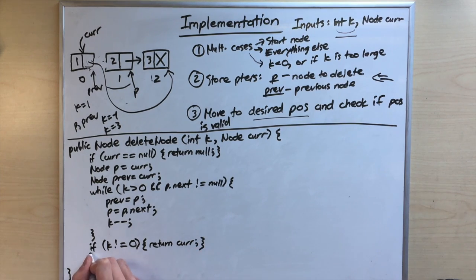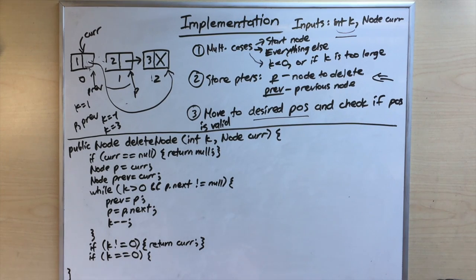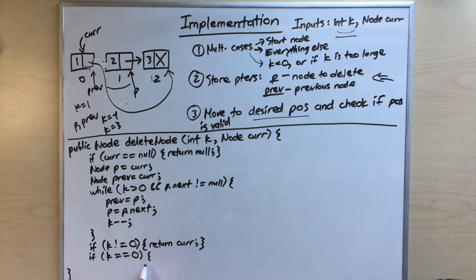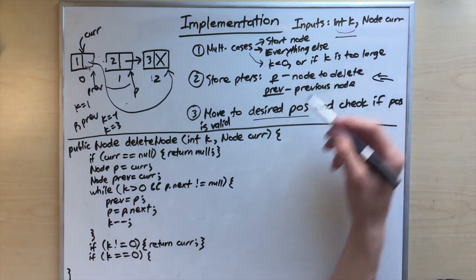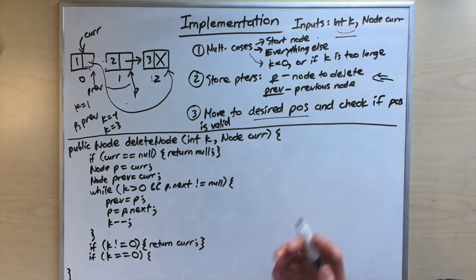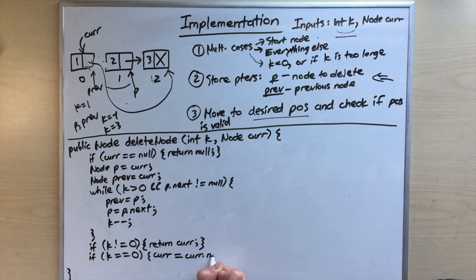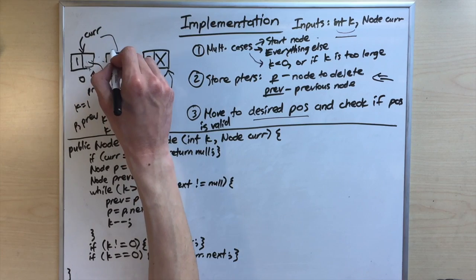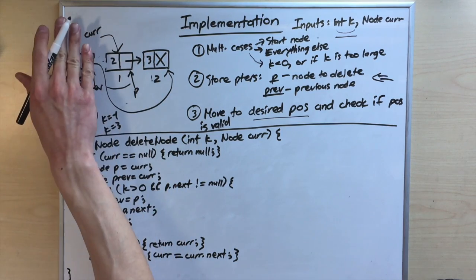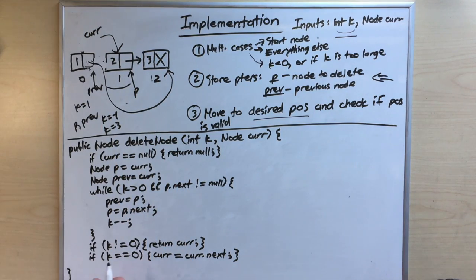If k does equal zero, we need to delete a node. If we're deleting the first node (prev equals p, meaning k was zero from the start), we set cur equal to cur.next, moving cur forward to skip the first node.